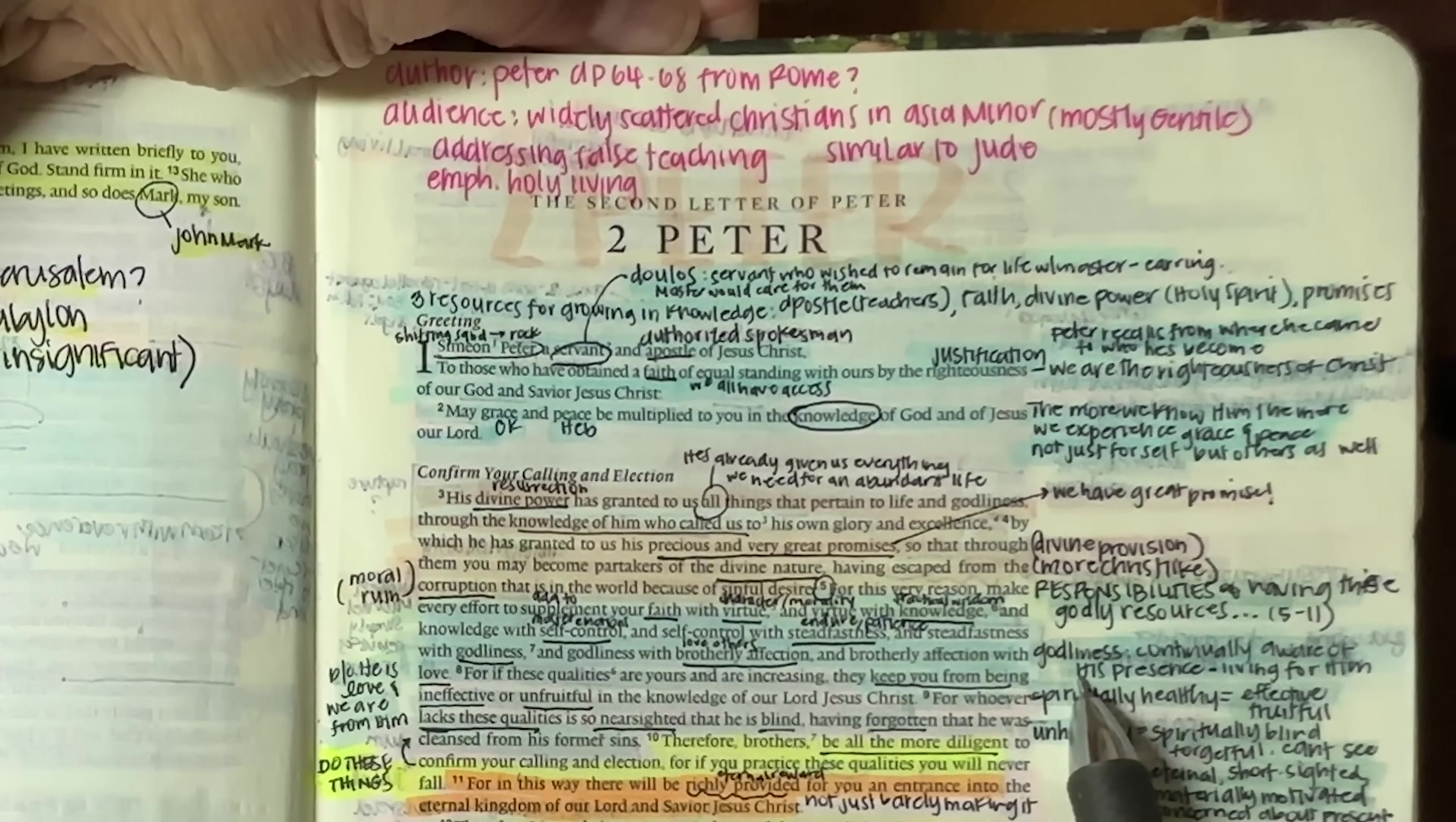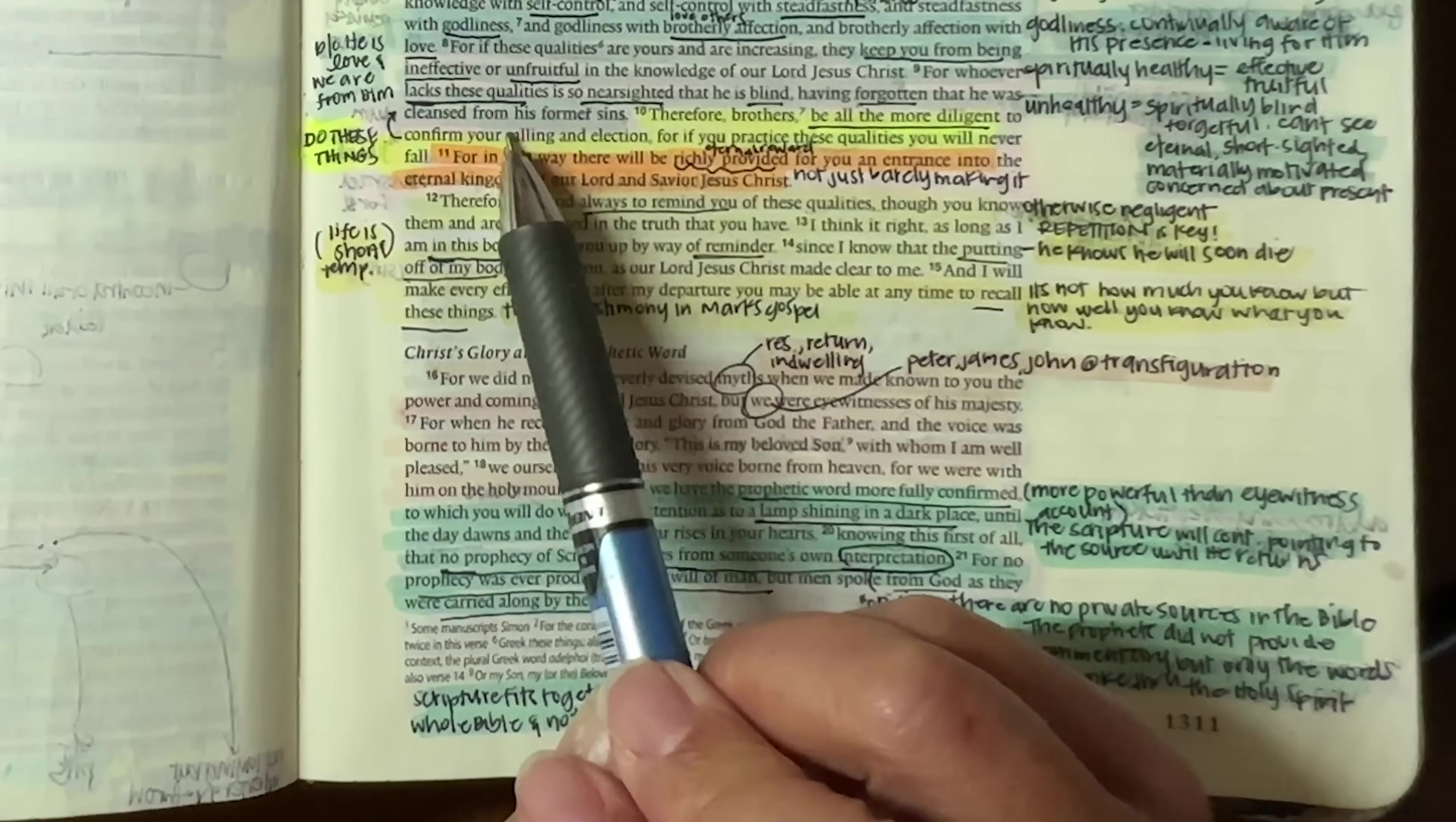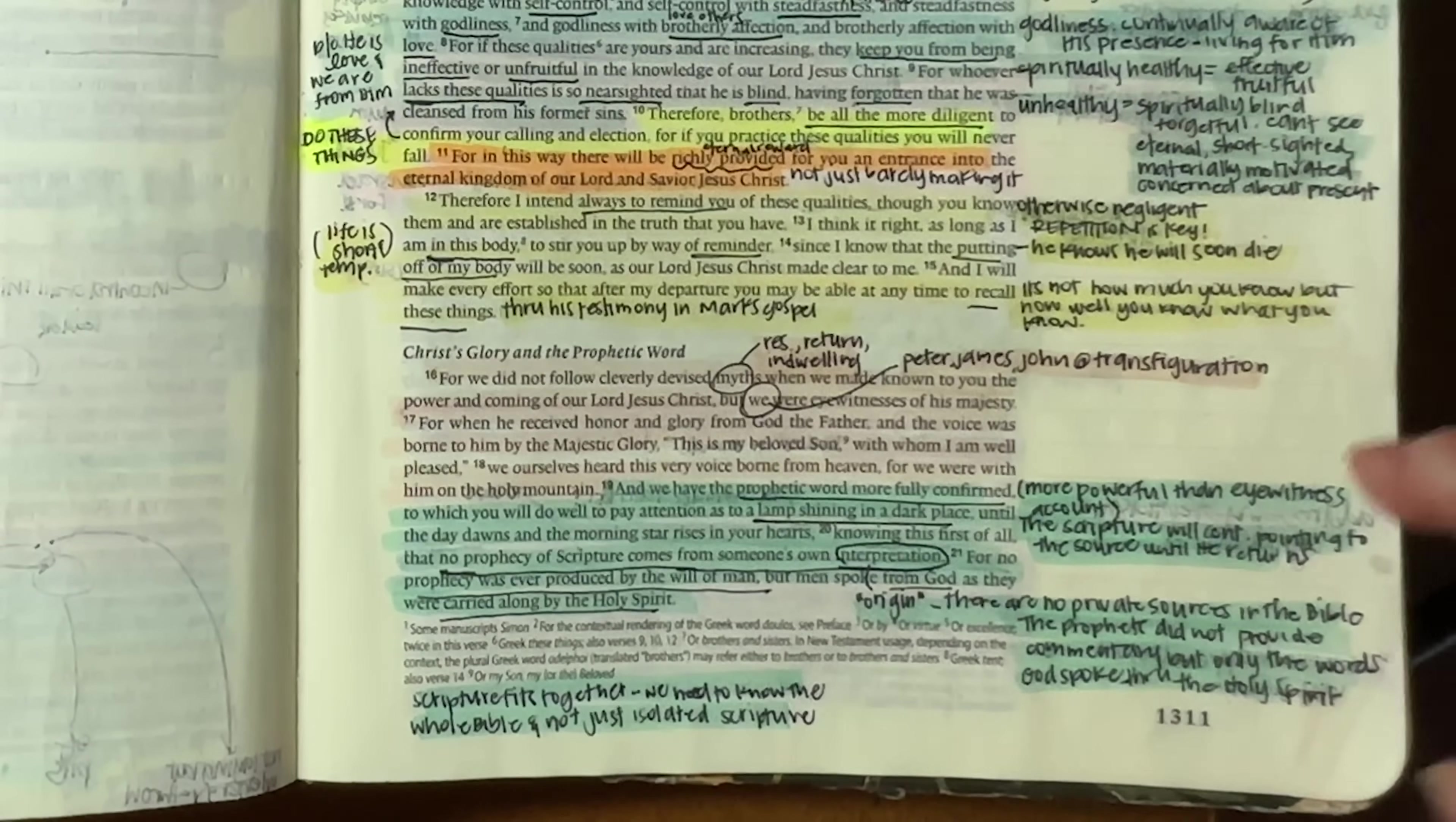So if you want a form of godliness, we've got to be continually aware of God's presence in our lives and live for him. And so if you have these qualities, if these qualities are yours and are increasing, they will keep you from being ineffective or unfruitful in the knowledge of our Lord Jesus Christ. For whoever lacks these qualities is so nearsighted, meaning you're spiritually blind, and that having forgotten that he was cleansed from his former sins. So whenever you become spiritually blind, you forget what Jesus has done for you, become forgetful, and therefore you can no longer see past what is right in front of you. You won't be able to see the eternal. You won't be able to see what's ahead. You will be so short-sighted. And these are typically people who are materially motivated, only concerned about the present life instead of being more concerned about what is to come in eternity.